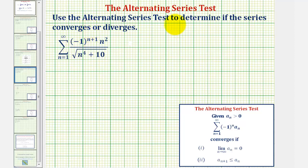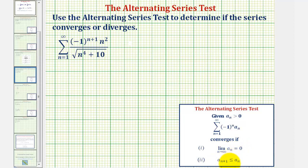We want to use the alternating series test to determine if the infinite series converges or diverges. To apply the alternating series test, we're given that a sub n, the non-alternating part of the infinite series, is greater than zero. The alternating series converges if the limit as n approaches infinity of a sub n equals zero, and a sub n plus one is less than or equal to a sub n, meaning the terms are non-increasing.